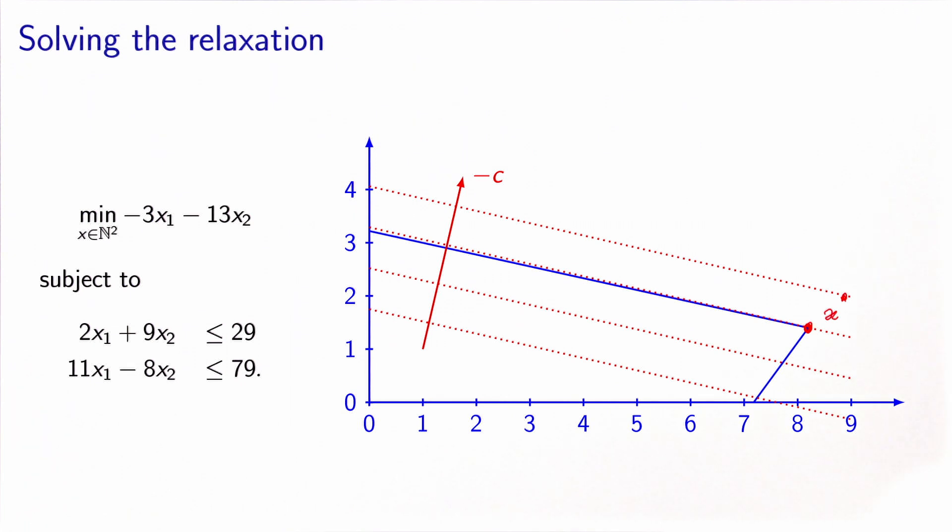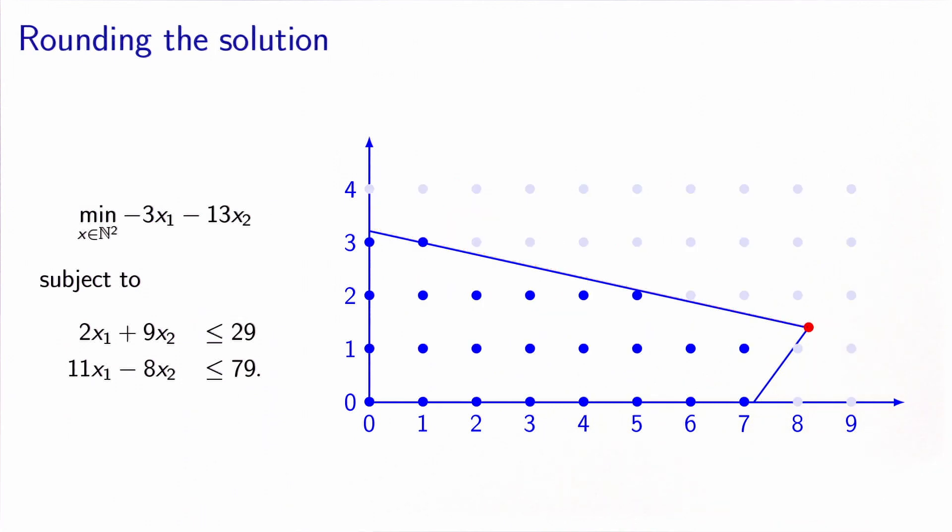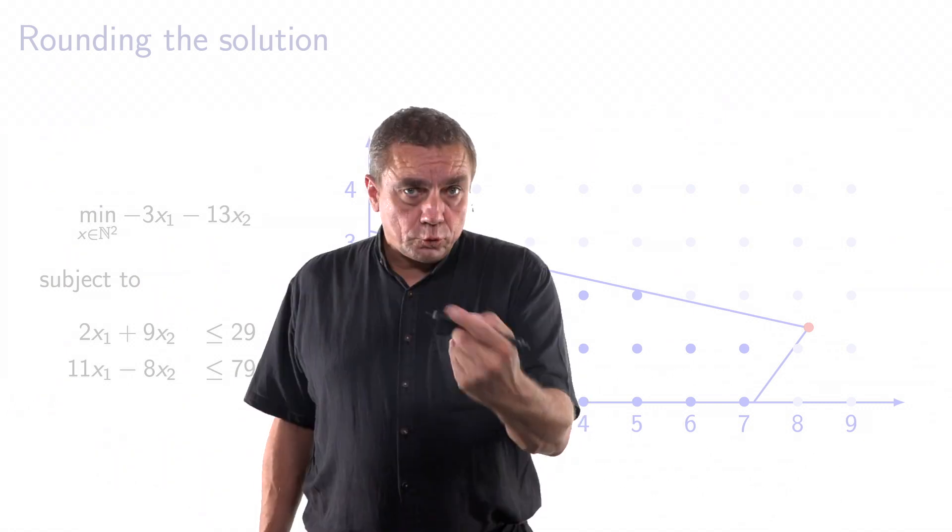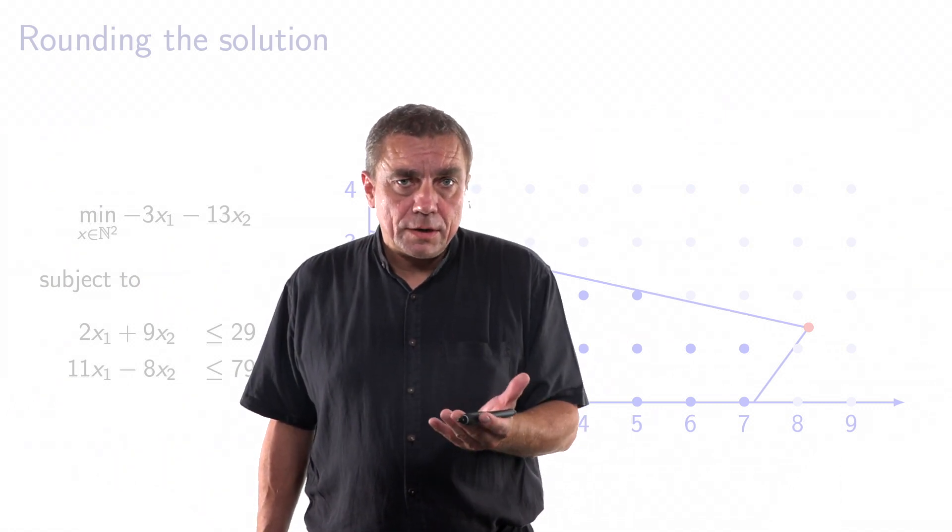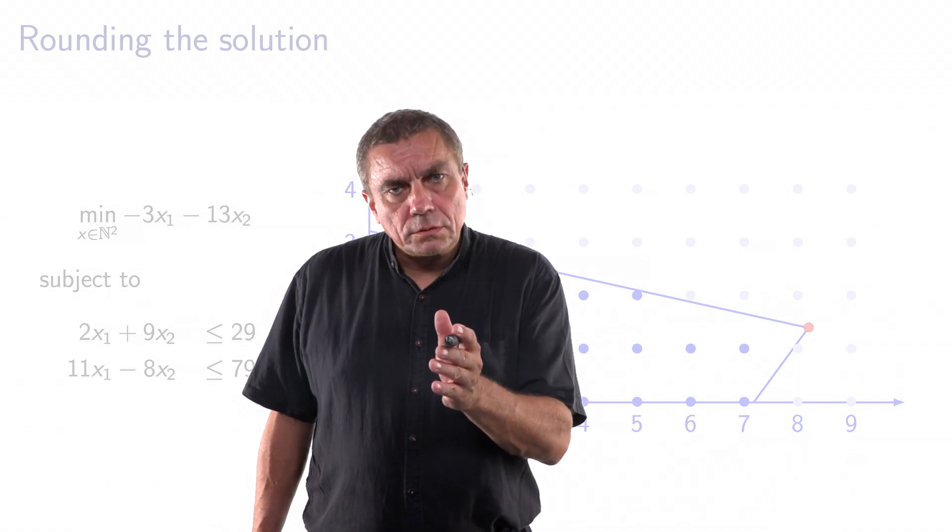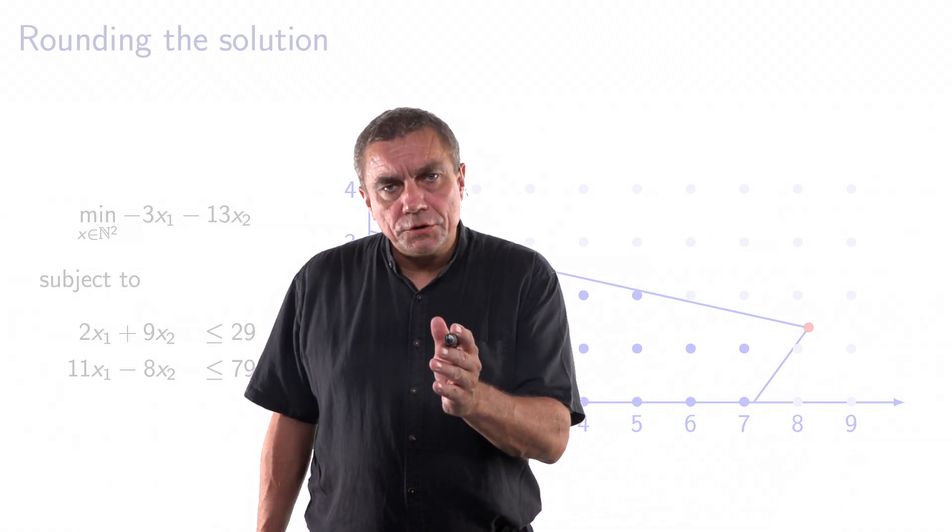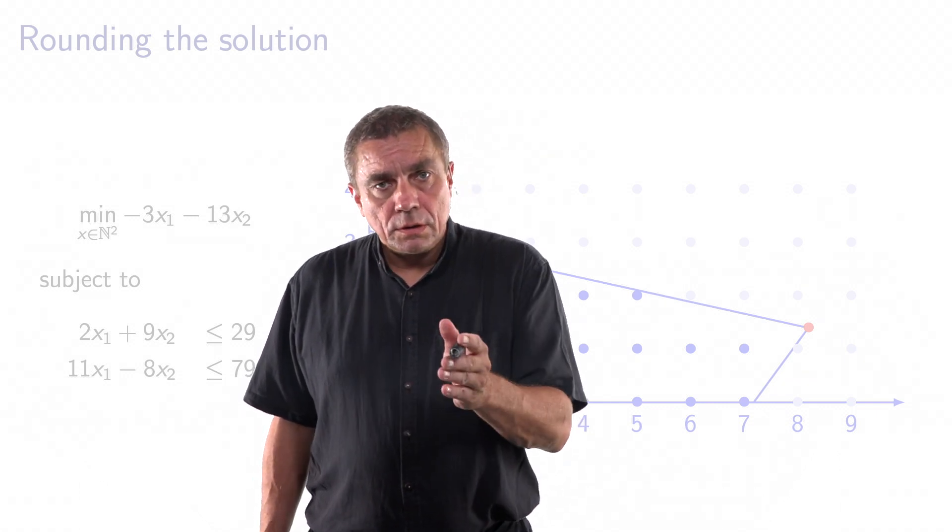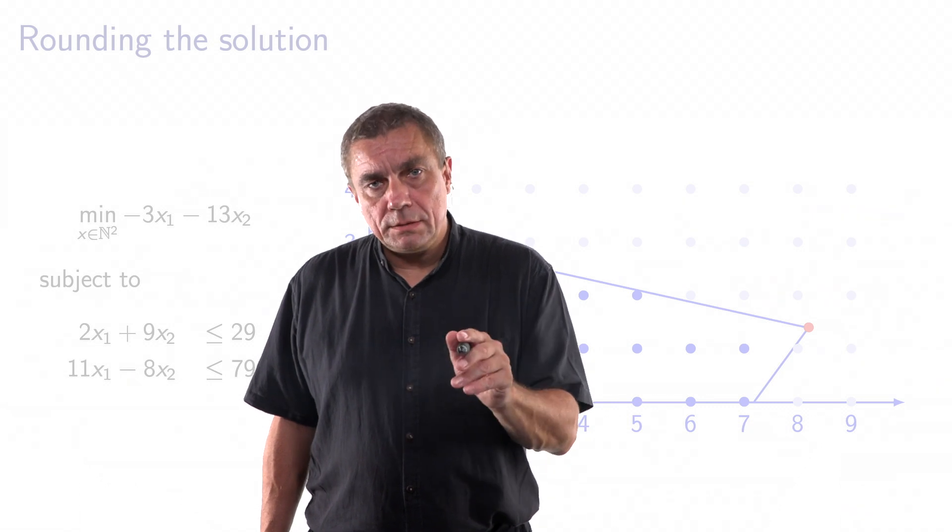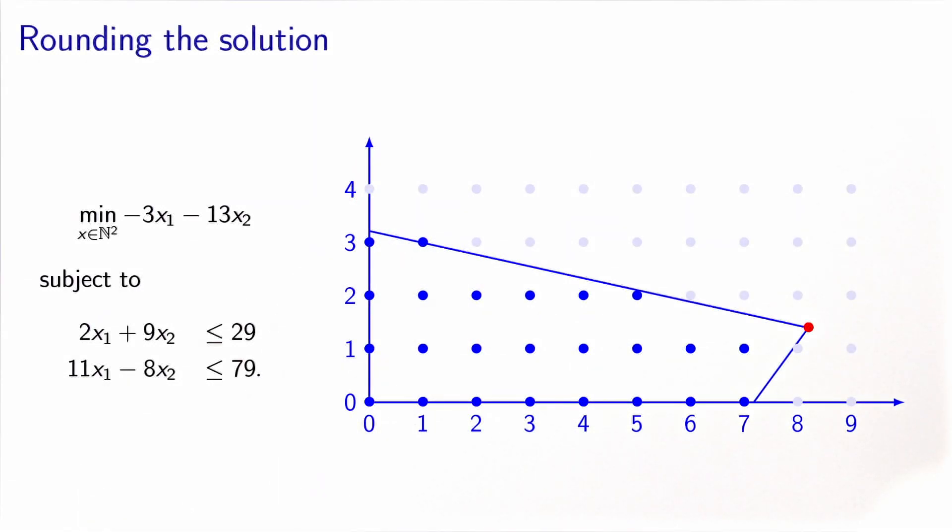And now my idea was to put back the lattice and round this solution to the nearest integer. Let's try to do this. Let's put back the lattice. We have two variables, x1 and x2. Each of them has a rational value. So there are two ways to round a real number into an integer. We can round it down, or we can round it up. So in total, we have four possibilities. And actually, these four possibilities are represented here by these four dots.